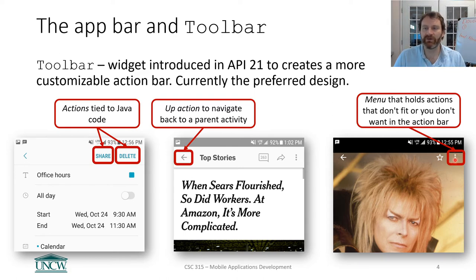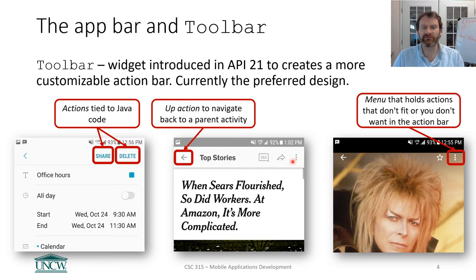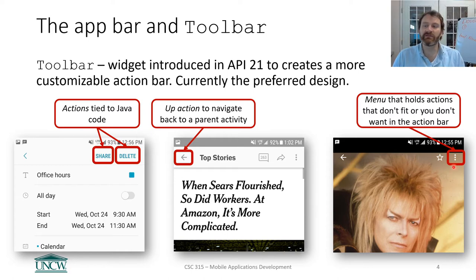The third thing the toolbar provides is a menu — a drop-down list baked into your app bar that holds actions that either don't fit because you've run out of space, or that you intentionally want to hide. For example, you might show only the favorite button prominently and hide less-used actions in the menu. Decluttering your UI and buttons is usually a good thing.